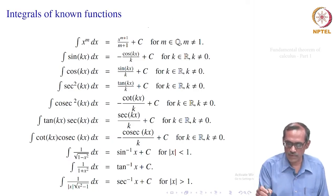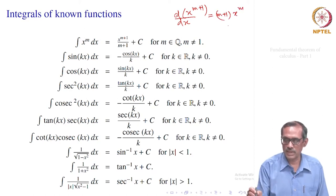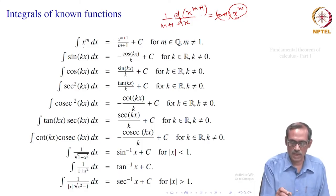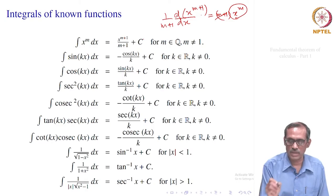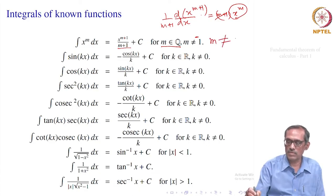We know that the derivative of x to the power m+1 with respect to x is equal to (m+1) times x to the power m. So we write that in terms of the integral: the integral of x^m equals x^(m+1) divided by (m+1), plus c — for m a rational number, but m not equal to minus 1, because at minus 1 the denominator would be 0.